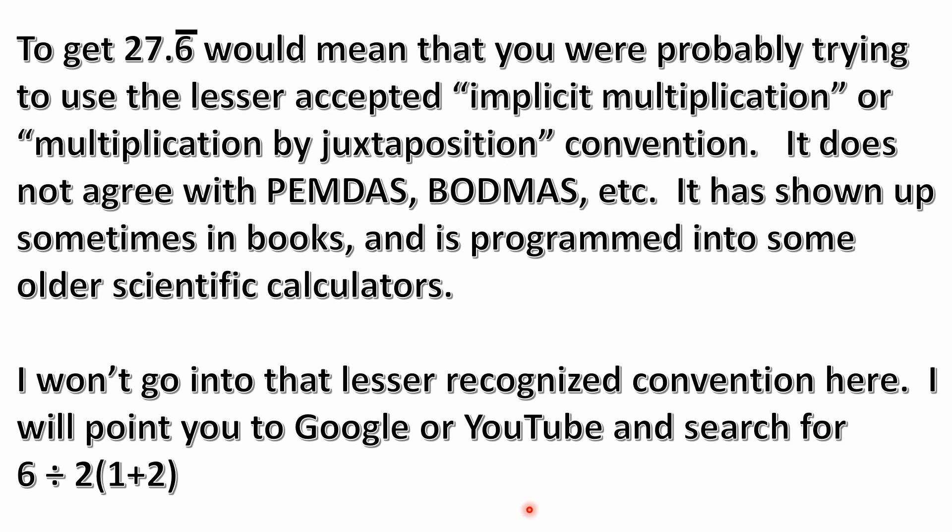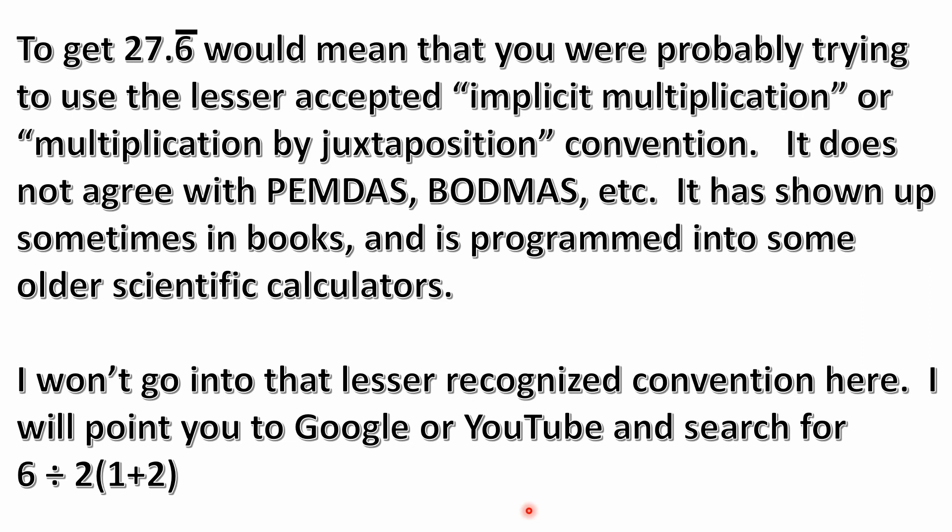To get that 27.6 repeating would mean that you are probably trying to use this lesser accepted implicit multiplication or multiplication by juxtaposition convention, which is a convention that's been used as sort of a shorthand thing that some have used, but that doesn't agree with PEMDAS and BODMAS. It has shown up sometimes in books and programmed into some older scientific calculators, but I'm not going to go into that lesser recognized convention here. I would just point you to Google or YouTube and just search for the problem 6 divided by 2 times the quantity 1 plus 2, and you'll find quite a large number of videos on that problem. It's a viral problem that has been all over the internet.